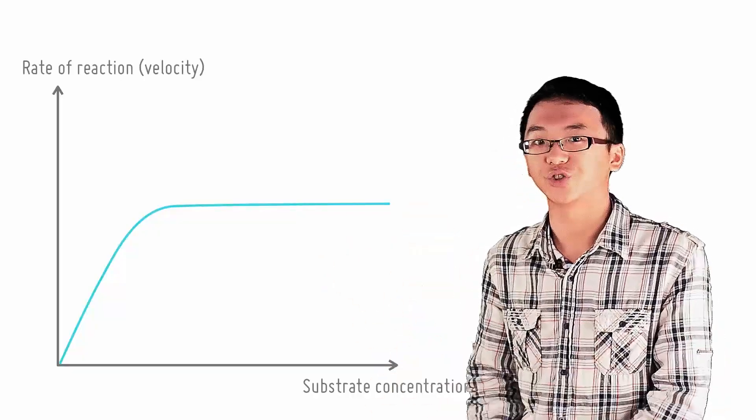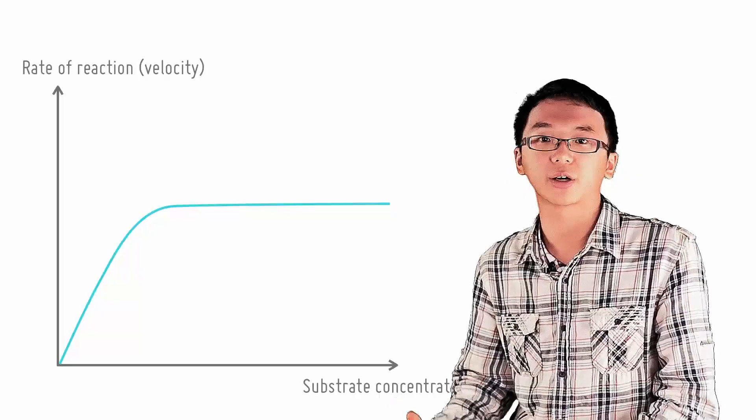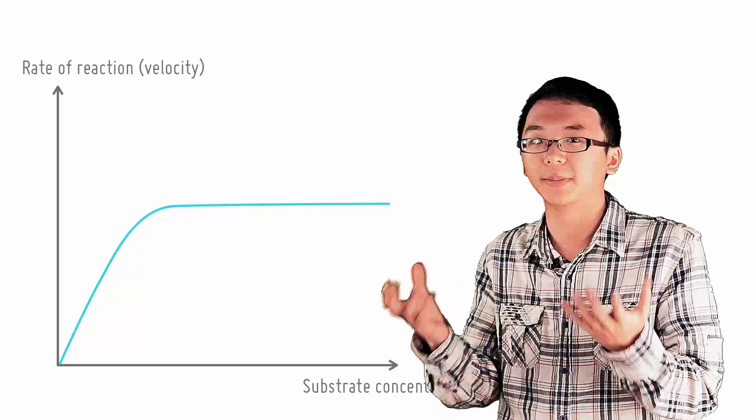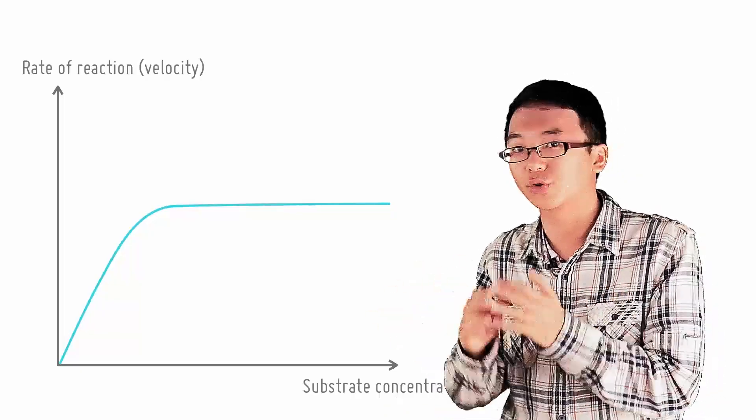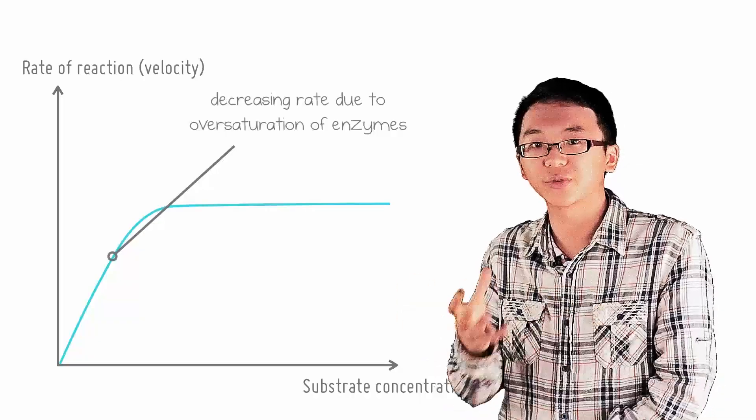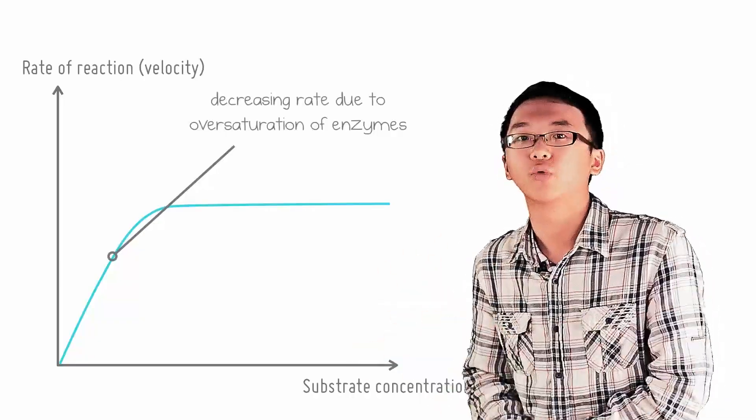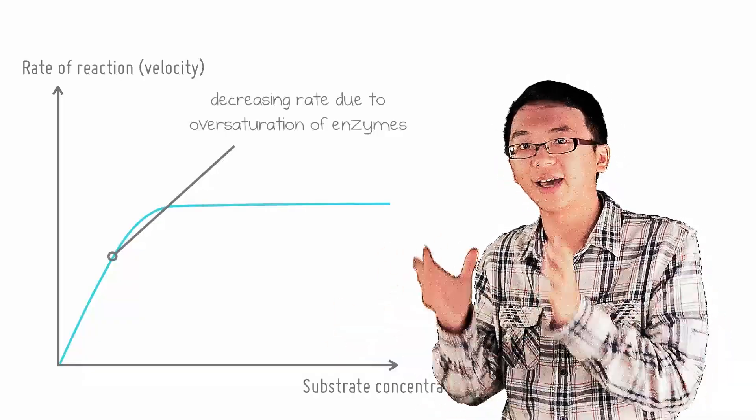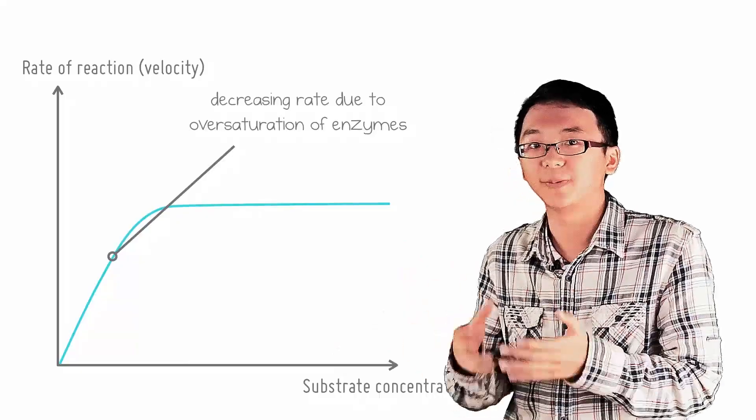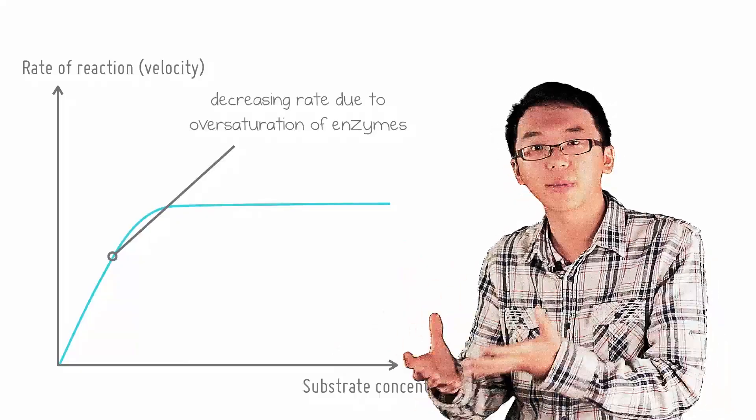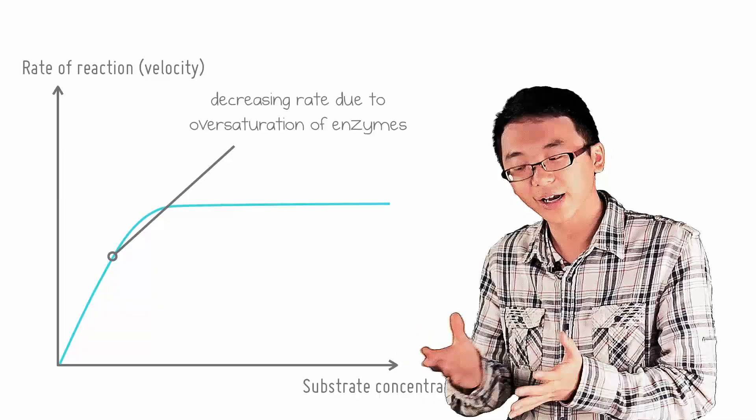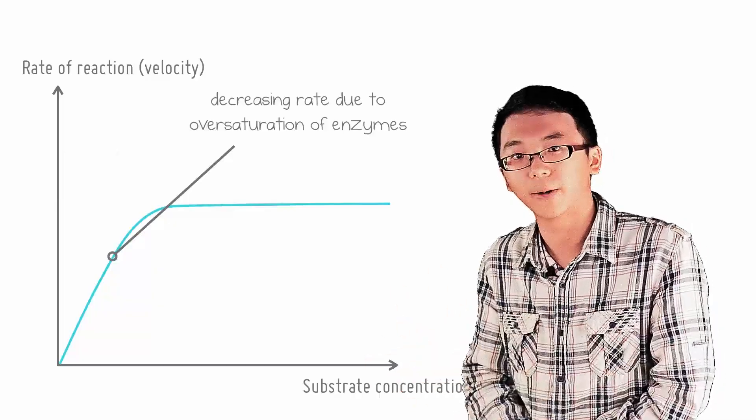This positive relationship holds true until substrate concentration is no longer the limiting factor and the graph levels to a plateau. Plateau saturation of enzymes occurs whereby all the enzymes are already acting on the substrate. Hence, beyond this point, no matter how much substrate you continue to add, other factors prevent the rate of reaction from increasing further.